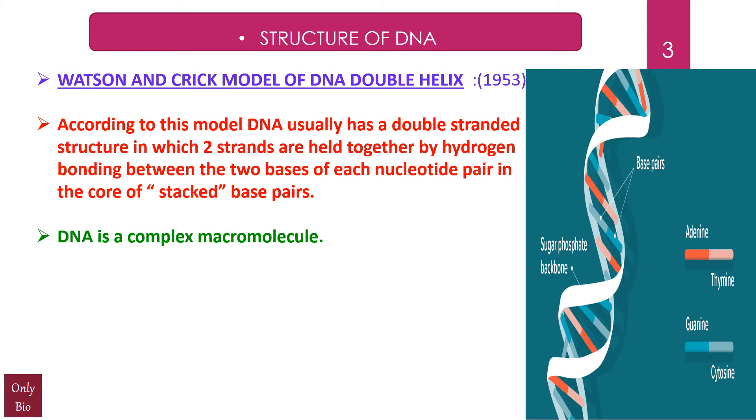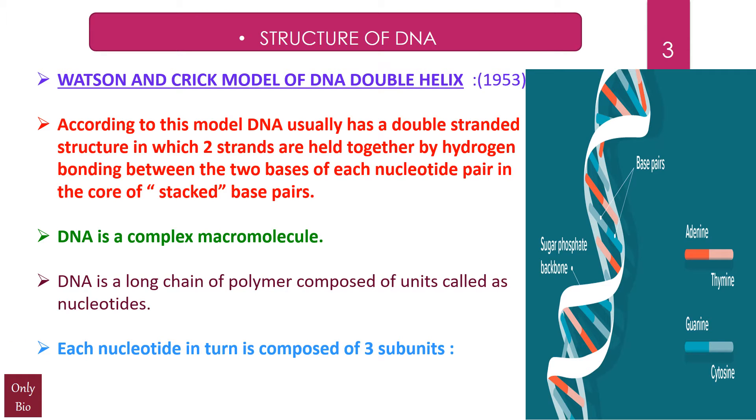DNA is a complex macromolecule. DNA is a long chain of polymer composed of units called nucleotides. We call them deoxyribonucleotides. Each nucleotide in turn is composed of three subunits: first pentose sugar, second phosphoric acid, third nitrogen bases. It's called pentose sugar because it's a sugar made up of five carbon atoms, and the detailed structure of the nucleotide has been done in the earlier video.